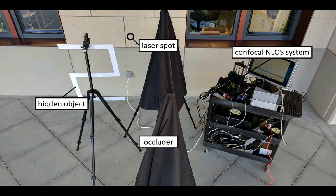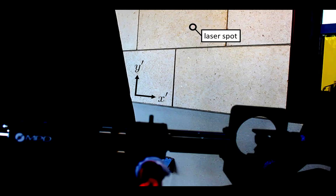Our proposed system and reconstruction algorithm work even outdoors under indirect sunlight. On the left, we have an object made with retroreflective tape. On the right is the prototype system. The laser spot, shown here, raster scans the wall from left to right.